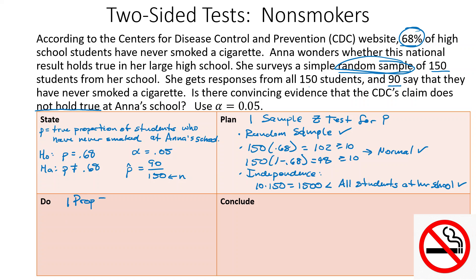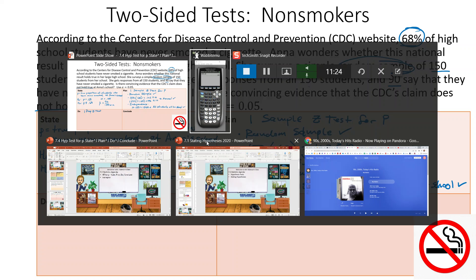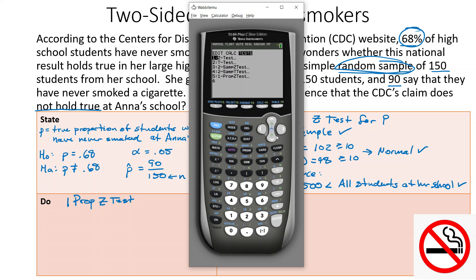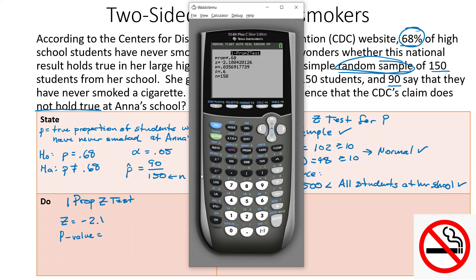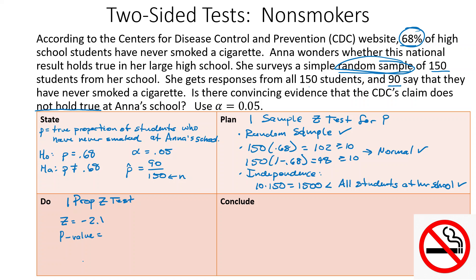We run the one-prop z-test on the calculator: STAT → TESTS → number 5. Enter p₀ = 0.68, x = 90, n = 150, and select the not-equal-to alternative. Press Calculate. We get z = −2.1 and a p-value of 0.035.